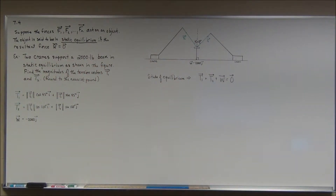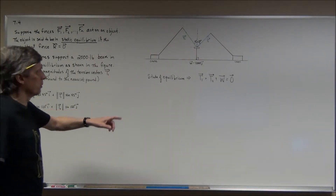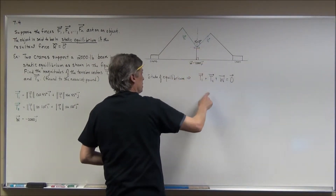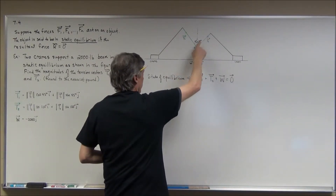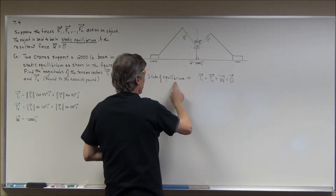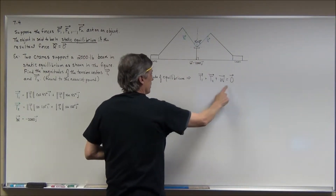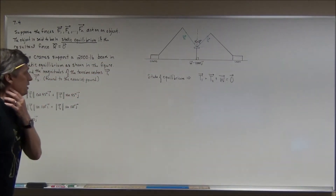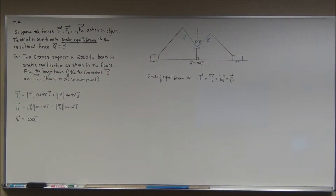I've gone ahead and stated the equilibrium condition. There are three forces — the weight of the beam and the two tensions of the cables that go from the cranes — and if we have a state of static equilibrium, then we're looking at all three of these vectors adding up to be the zero vector.